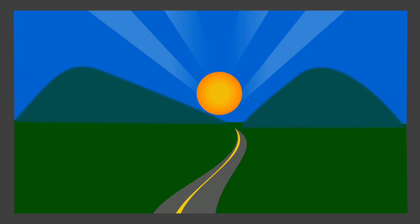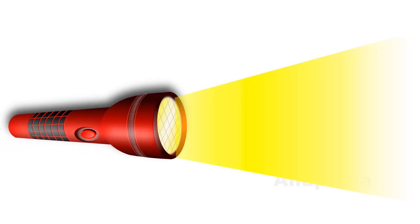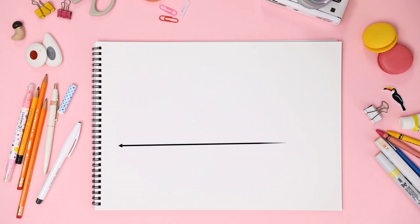Have you observed the sun's rays? And this torch and its light — I will tell you what these are. Here is a line m with one point which is point P. We can draw a ray from this point P — P is the starting point.